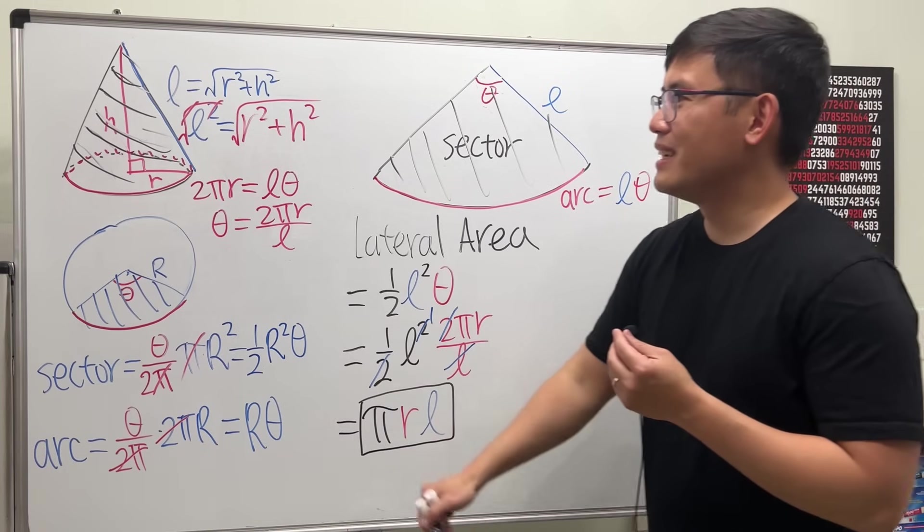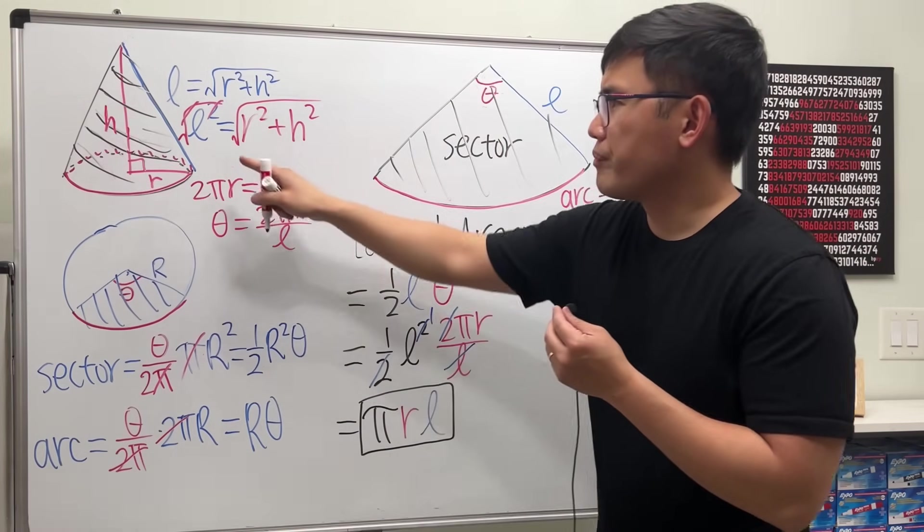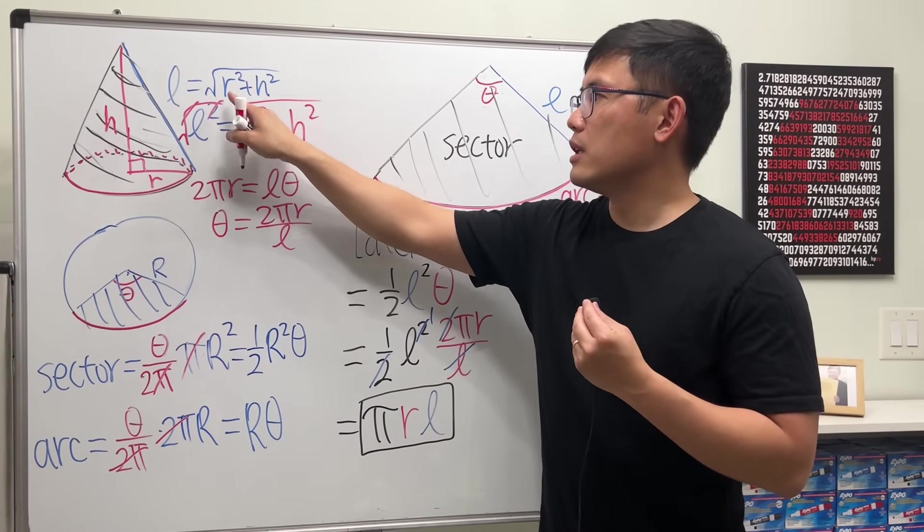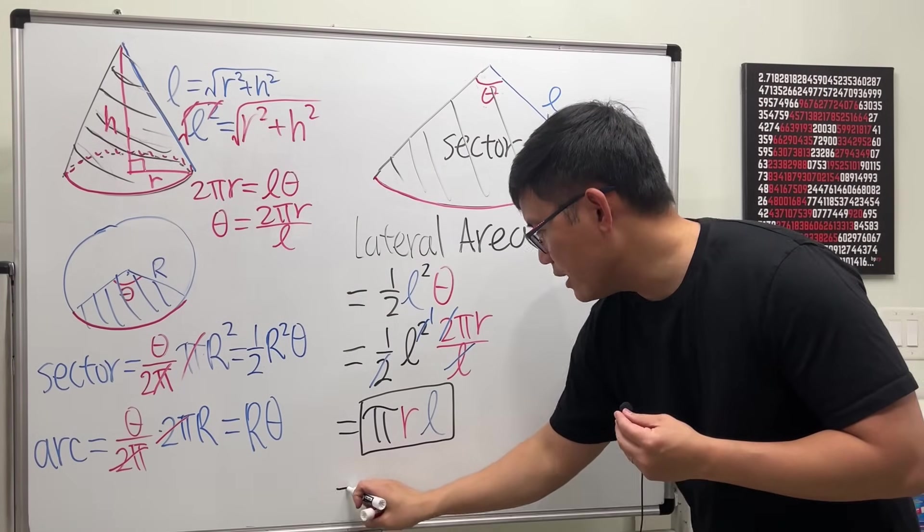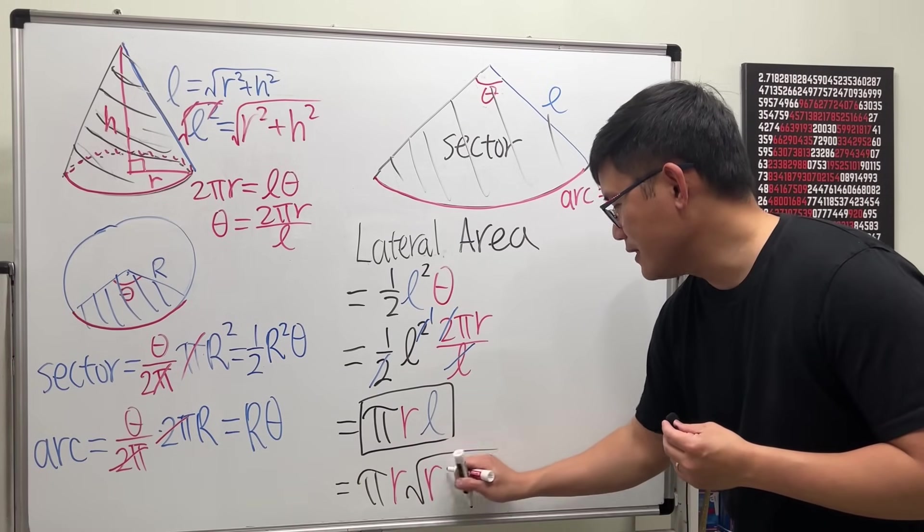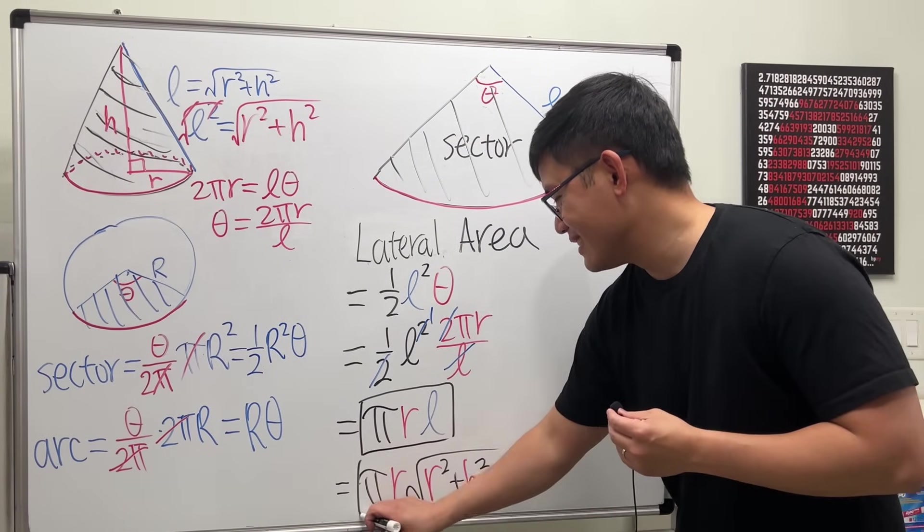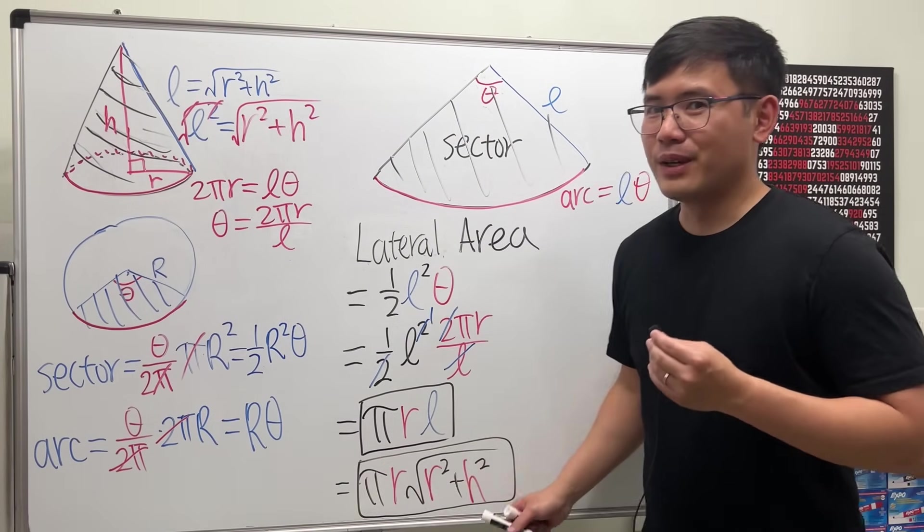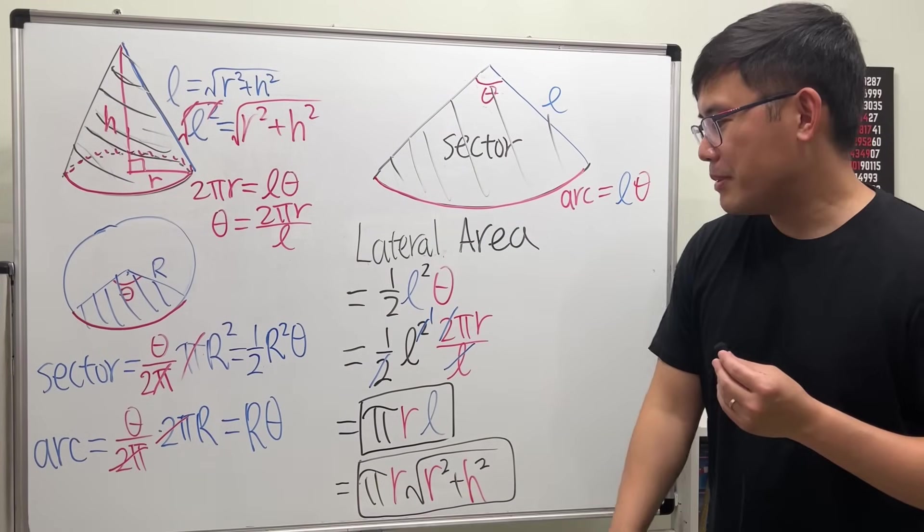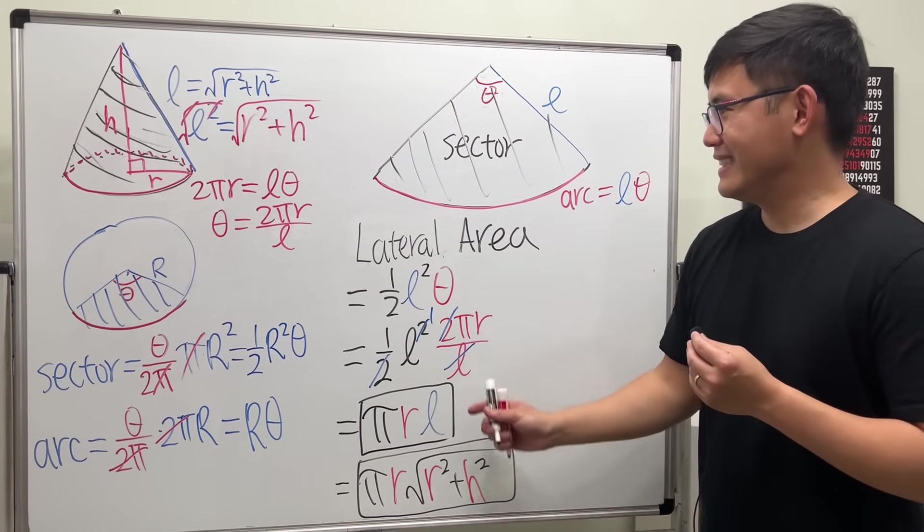But sometimes we are given r and h. So I'm just going to put down the L in terms of r and h right here for you guys. So we can also say pi times r times the square root of r squared plus h squared. So this works if we are given r and h. And if you happen to have L, then you can just use this. That's it.